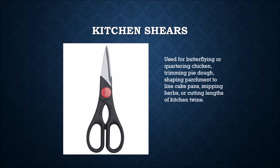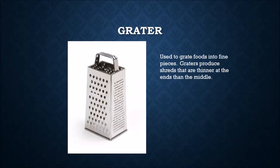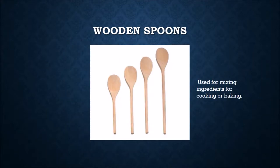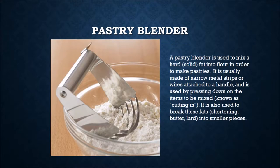Kitchen shears are used for butterflying or quartering chicken, trimming pie dough, shaping parchment to line cake pans, snipping herbs, or cutting lengths of kitchen twine. A grater is used to grate foods into fine pieces; graters produce shreds that are thinner at the ends than the middle. Wooden spoons are used for mixing ingredients for cooking or baking.